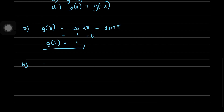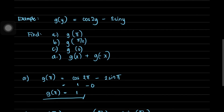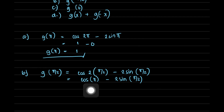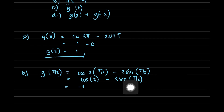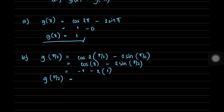For part (b), g(π/2): replacing y with π/2, we have cos(2 × π/2) - 2sin(π/2) = cos(π) - 2sin(π/2). Cosine of π = cos(180°) = -1, and sine of π/2 = sin(90°) = 1. So this becomes -1 - 2(1) = -1 - 2 = -3. Therefore g(π/2) = -3.